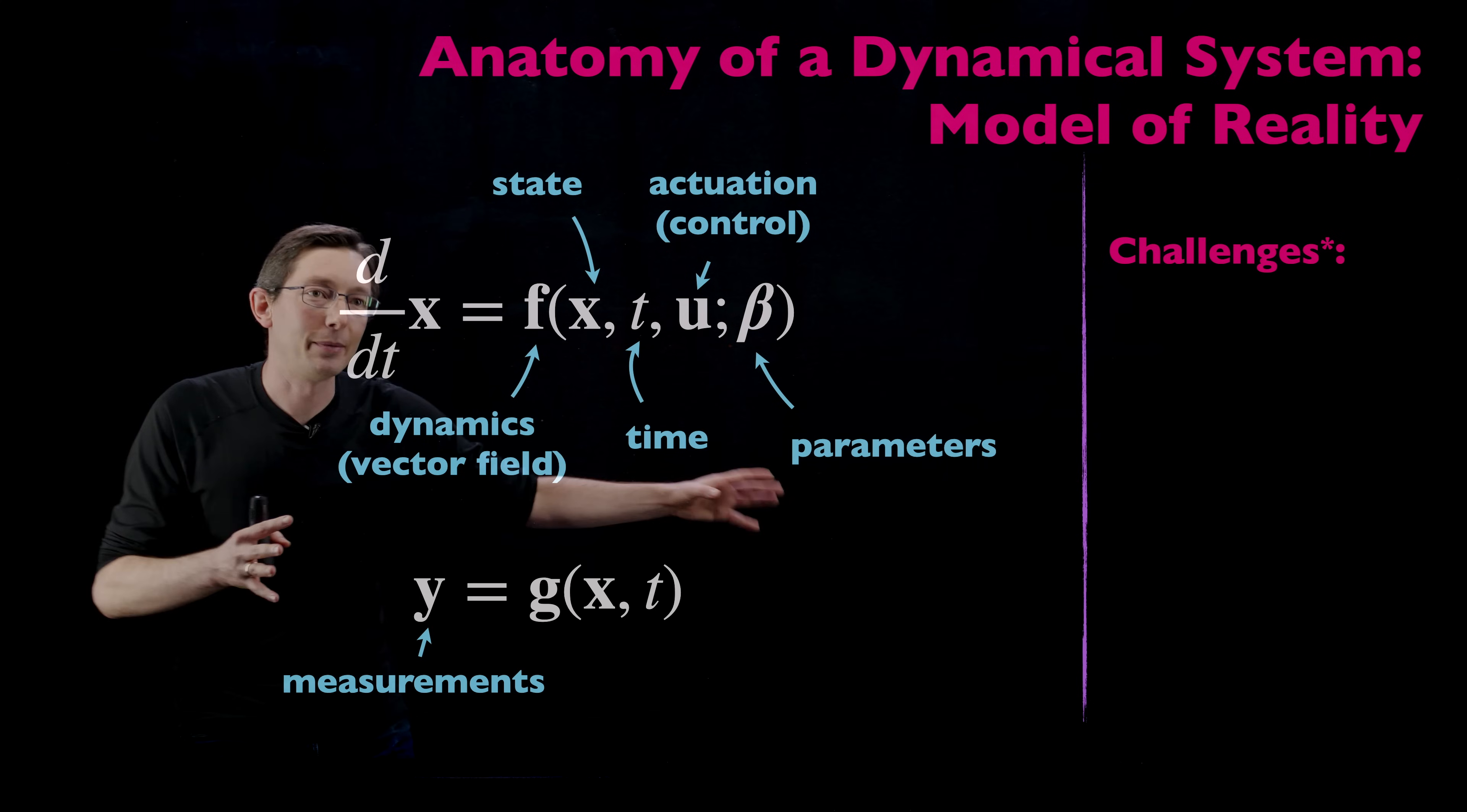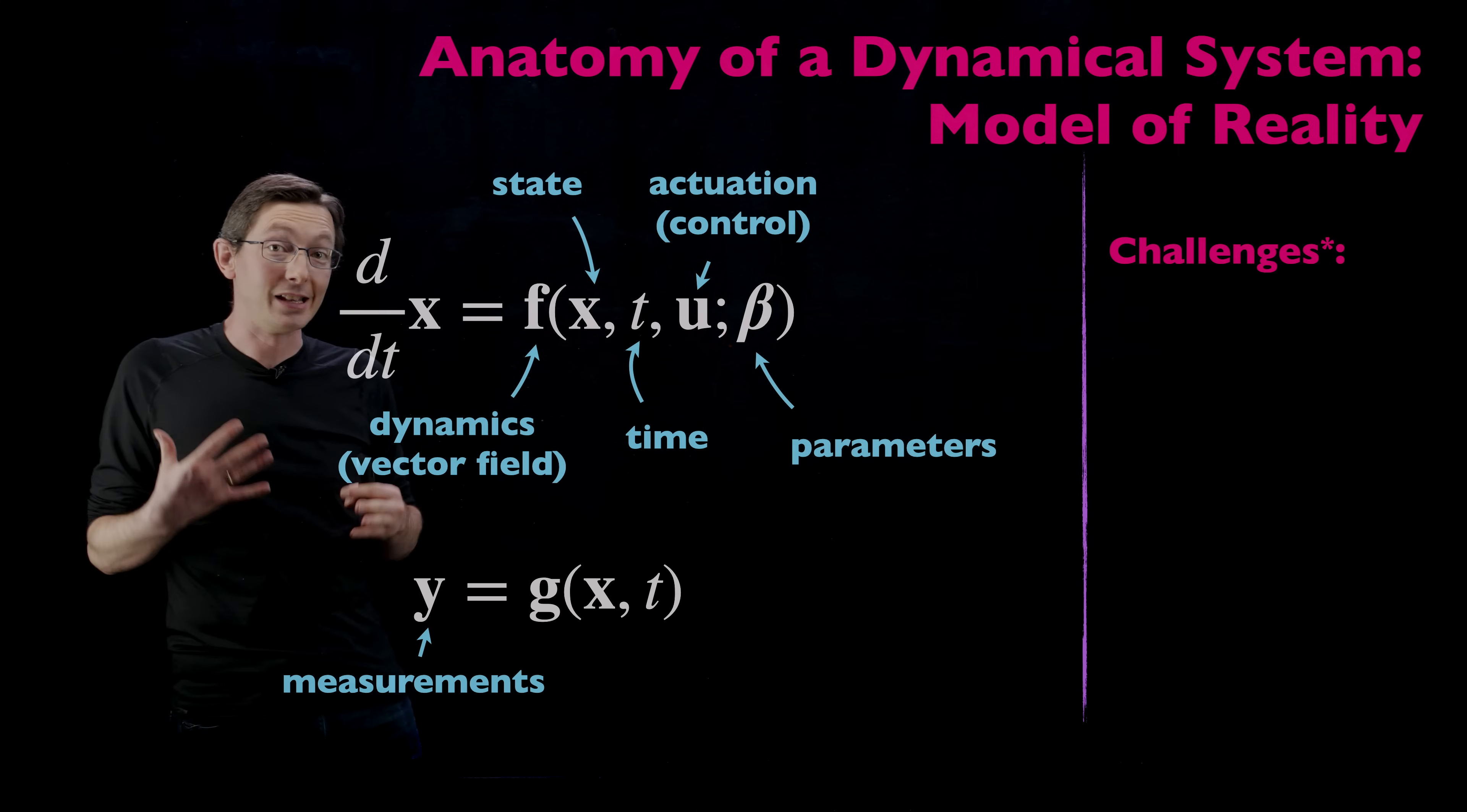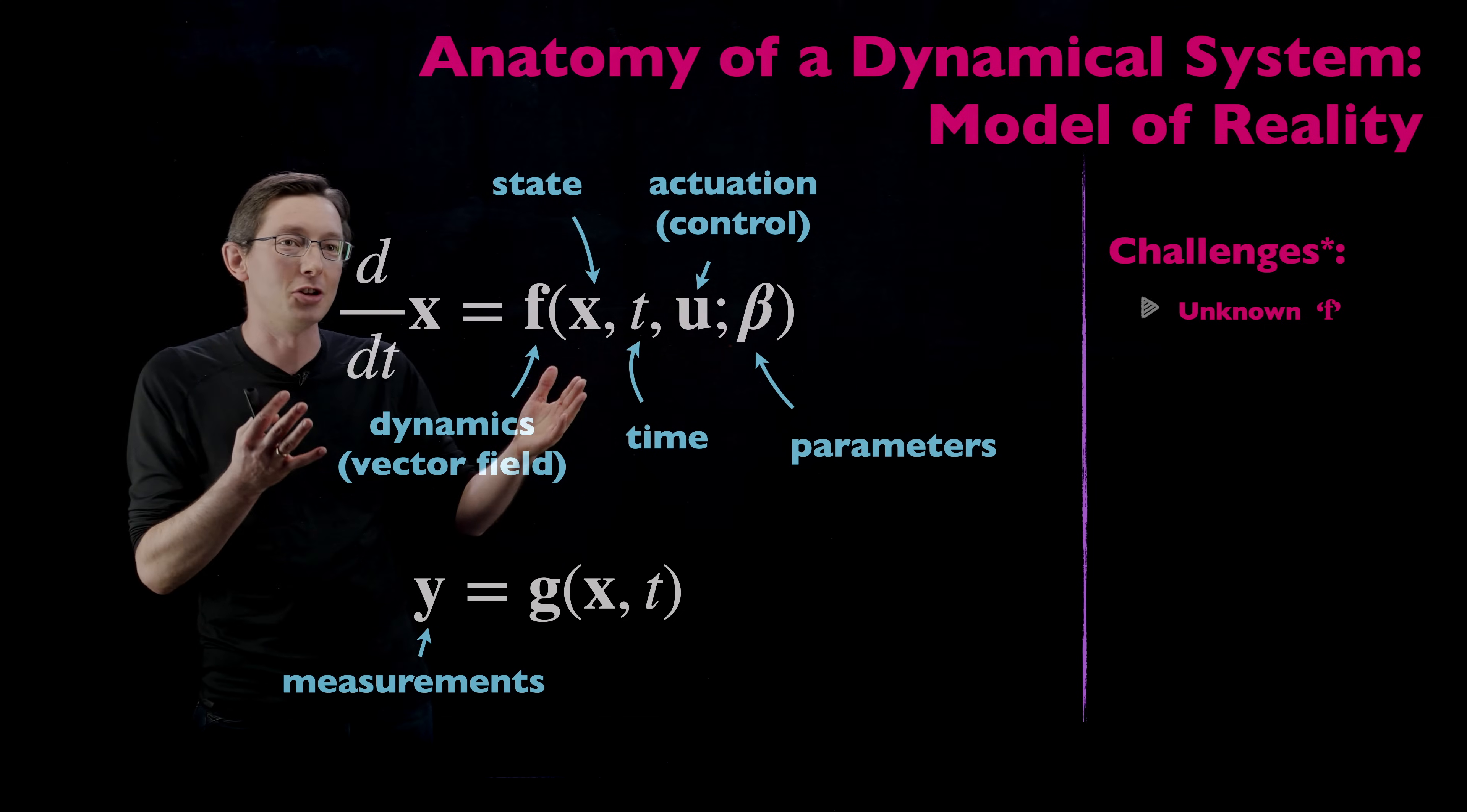Now that we've talked about what is the anatomy of a dynamical system, I want to walk you through what are the modern challenges. People have been writing down dynamical systems and studying them and analyzing them for centuries. Newton's second law is a dynamical system. That was the beginning of our foray into dynamical systems. But in the modern era, a lot has changed and there are some big challenges that we're able to start tackling now.